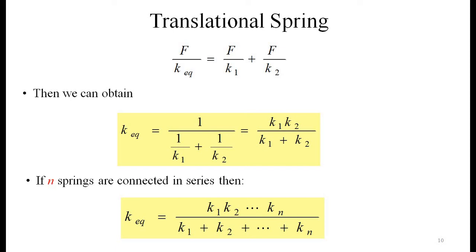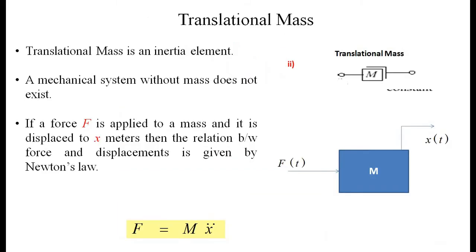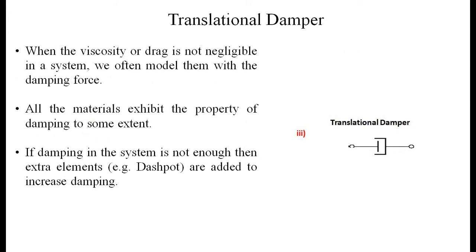The translational mass is an inertia element — a mechanical system without mass does not exist. If a force F is applied to a mass and it is displaced x meters, the relation is given by Newton's law: F = m·ẍ, where F(t) and x(t) are the force and displacement as functions of time.